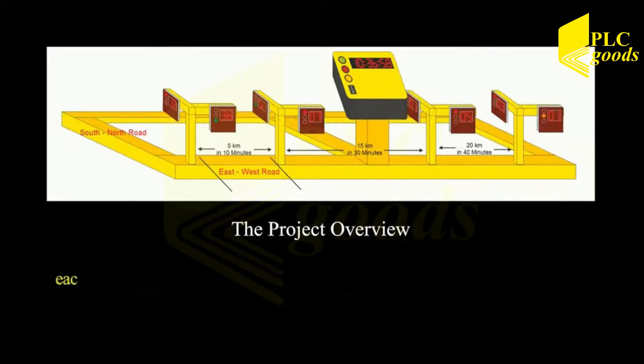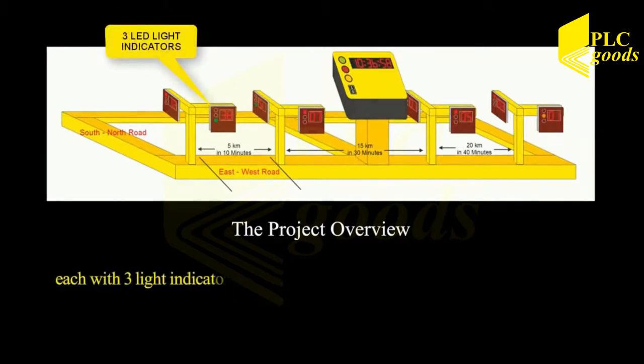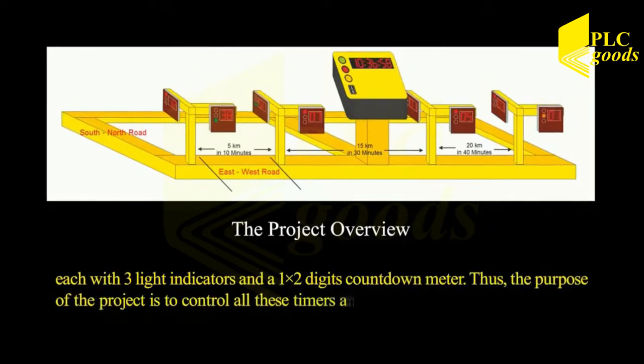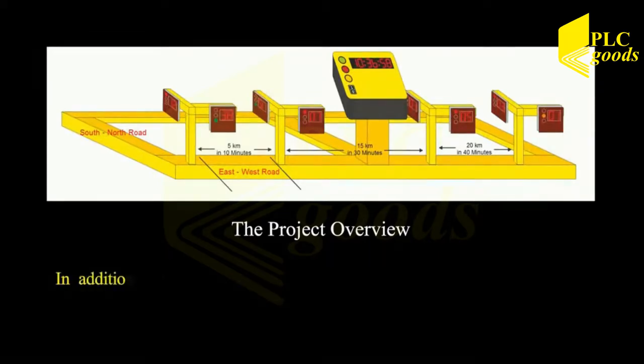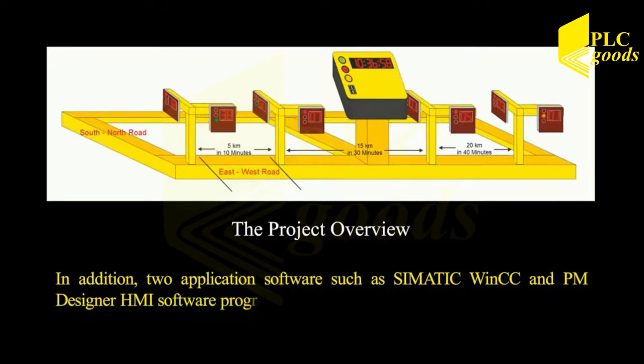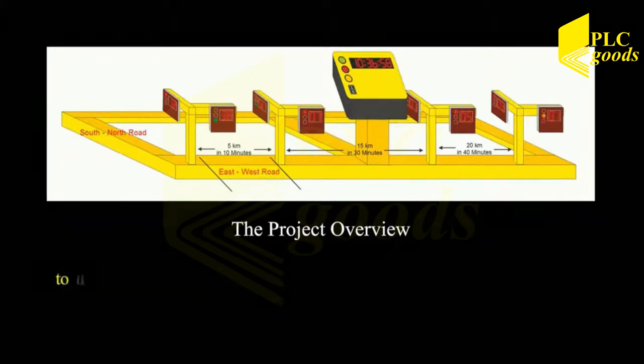I have two traffic light boxes, each with three light indicators and a one to two digit countdown meter. Thus the purpose of the project is to control all these timers and traffic lights all in harmony. In addition, two application software such as Simatic WinCC and PM Designer HMI software programs were used to enable the control system to utilize a PC monitor and a 7-inch LCD display as system HMI display devices.